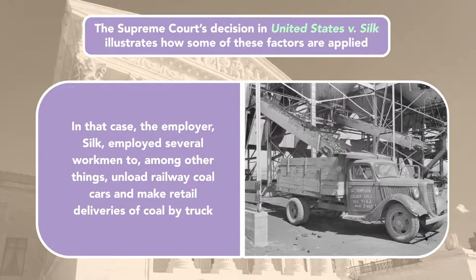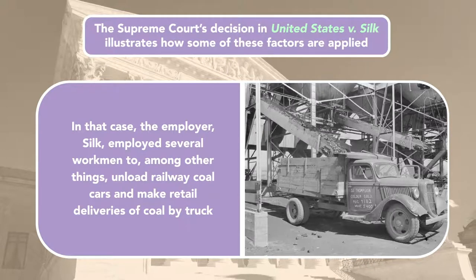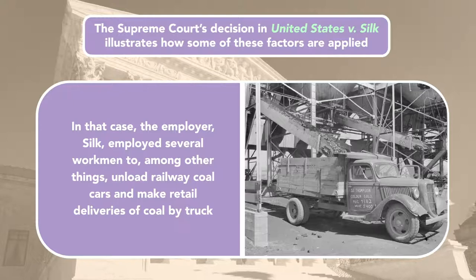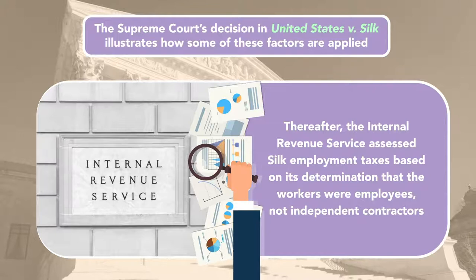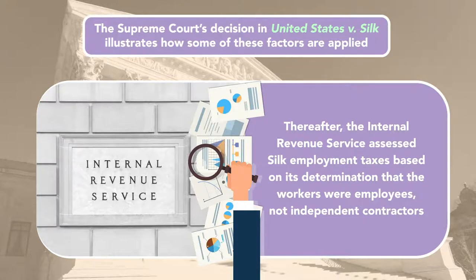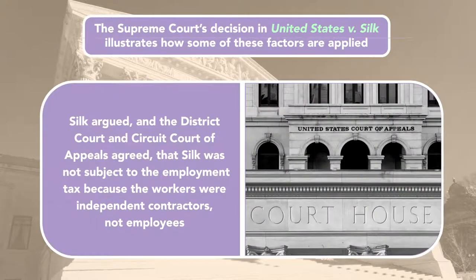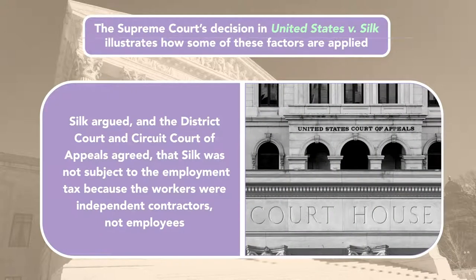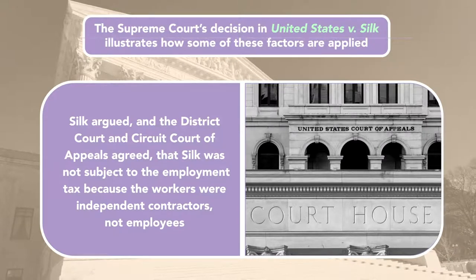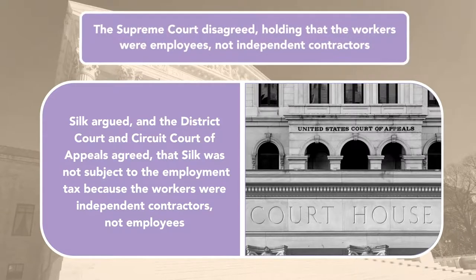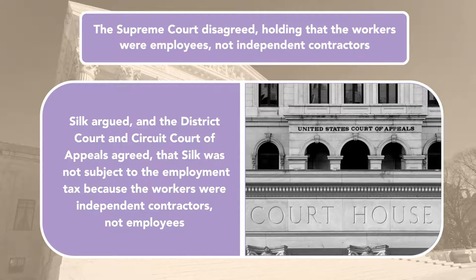In that case, the employer Silk employed several workmen to, among other things, unload railway coal cars and make retail deliveries of coal by truck. Thereafter, the Internal Revenue Service assessed Silk employment taxes based on its determination that the workers were employees, not independent contractors. Silk argued, and the District Court and Circuit Court of Appeals agreed, that Silk was not subject to the employment tax because the workers were independent contractors, not employees. The Supreme Court disagreed, holding that the workers were employees, not independent contractors.